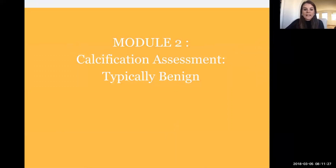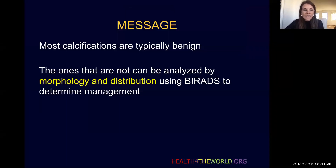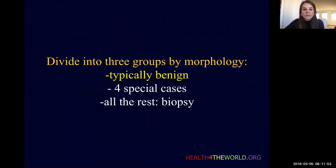This is module number two, and this is going to be a review of the long list of calcifications that we frequently encounter in the breast that are typically benign. The message for this part of the talk is that most calcifications that we see in the breast are typically benign. However, the ones that are not can be analyzed by using both their morphology and distribution using BI-RADS to determine the management. We're going to start by reviewing the typically benign breast calcifications.